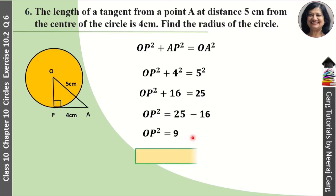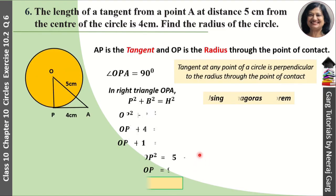Aur 9 ka joh square root hota hai, wo kaitna hota hai? 3. To haamne paas OP kitnye a gahi? 3 cm. Aur yahi haamne find karne thi. Matlab radius ho gaya humara 3 cm.